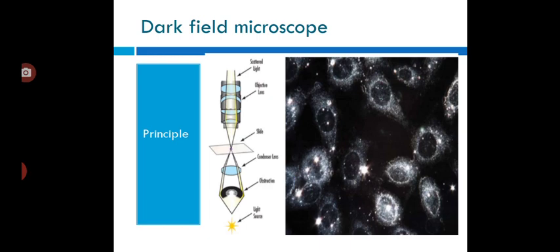arranged so that the light source is blocked off, causing light to scatter as it hits the specimen. This is ideal for making objects with refractive values similar to the background appear bright against a dark background. When light hits an object, rays are scattered in all directions.